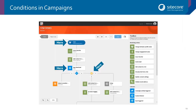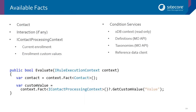In marketing automation, we use these conditions in several places. As you can see from the screenshot, we use it in the entry trigger, in a listener (in this case a goal-triggered listener), and in a custom listener as well. Going back to facts — you can extract the contact as a fact, since we need access to that in most cases, but there are a few additional facts available.